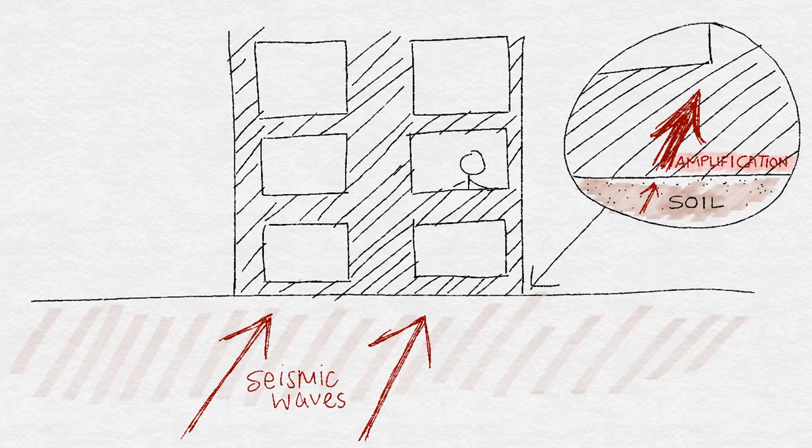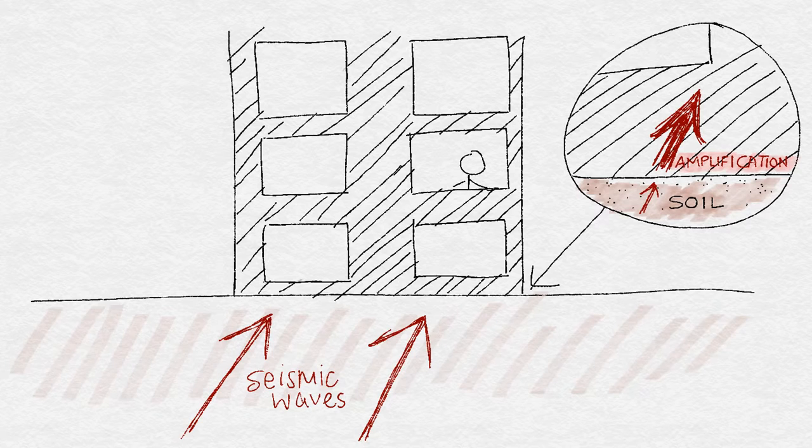In overground structures, the seismic waves come in contact with soil before they hit the building. Soil amplifies them, causing structures to vibrate more vigorously than they would have if, hypothetically, there was no soil.